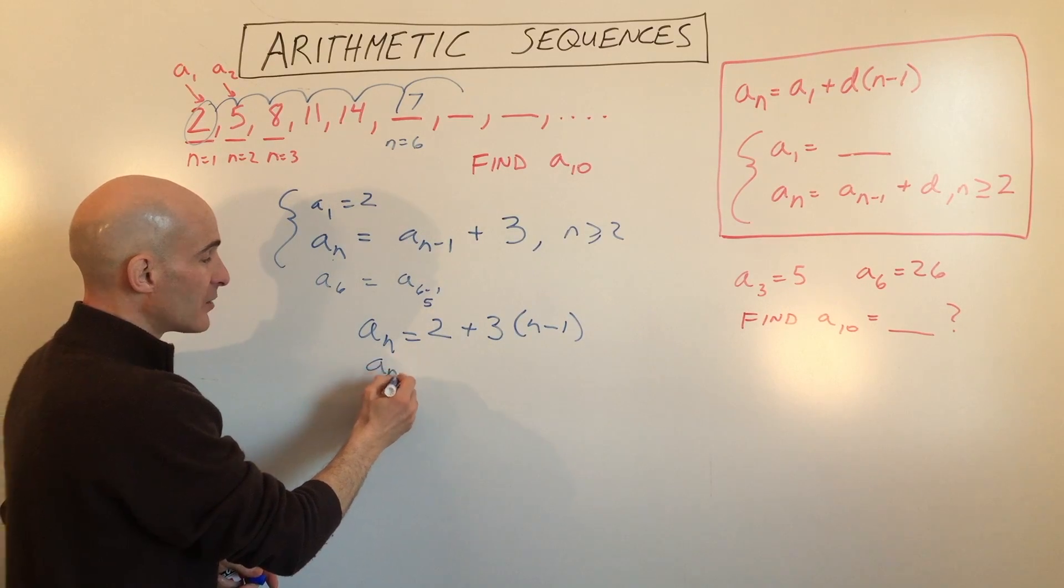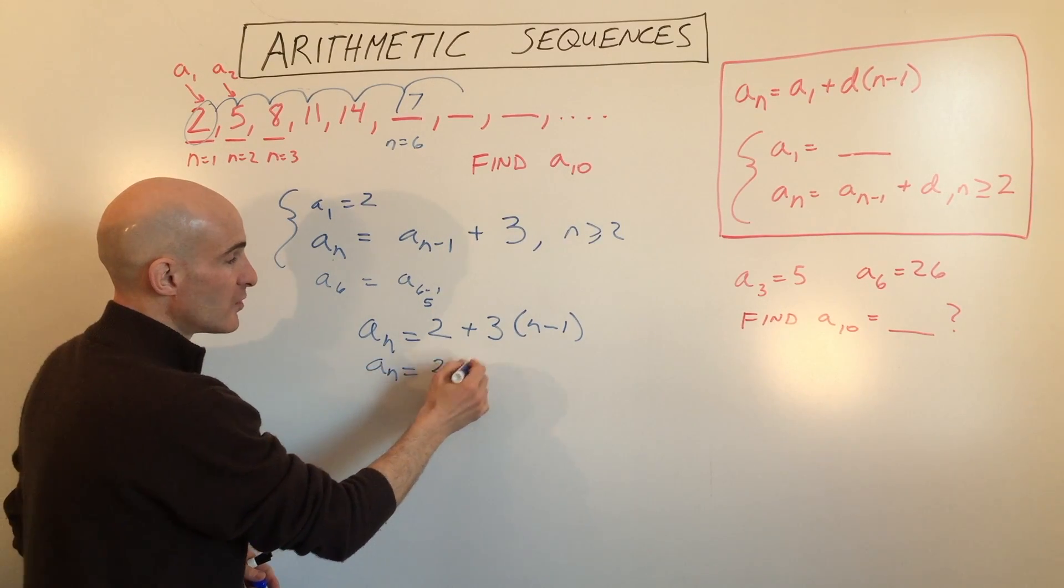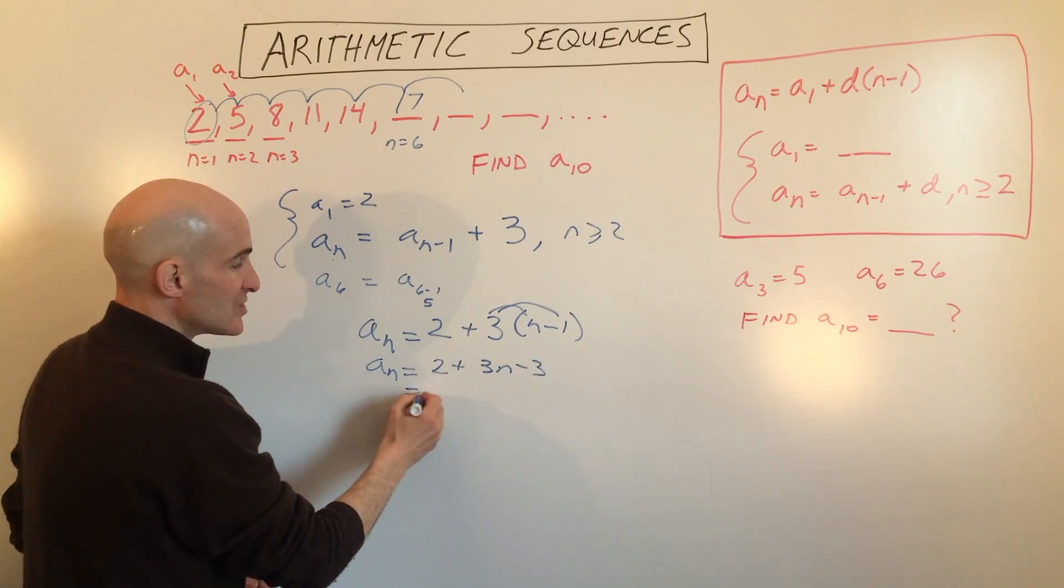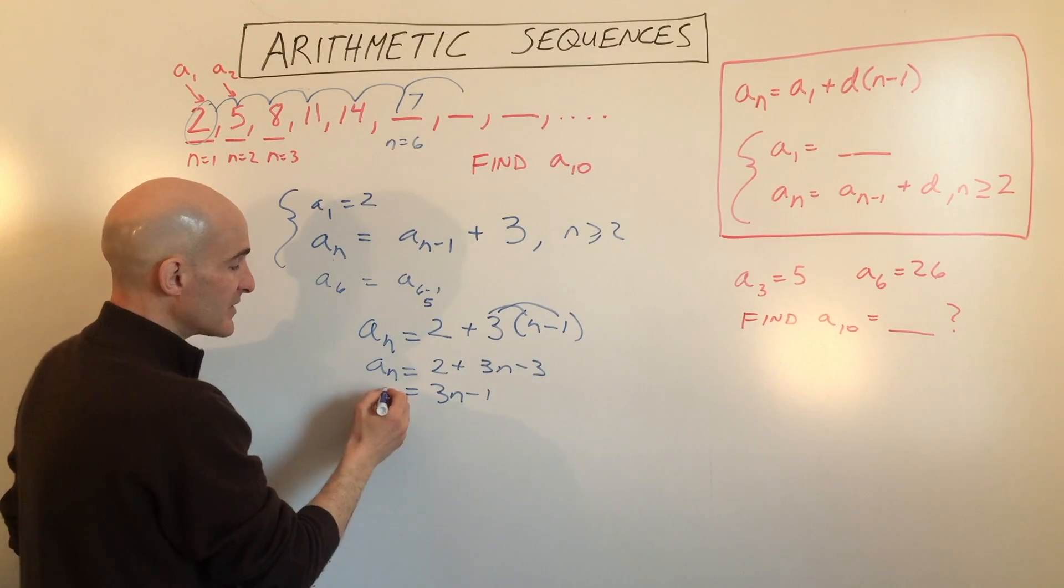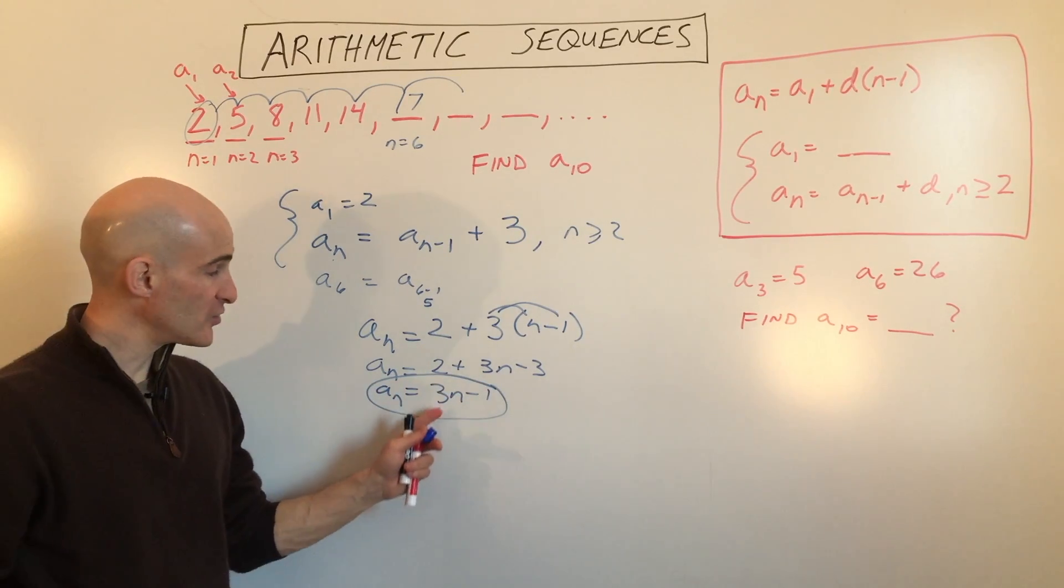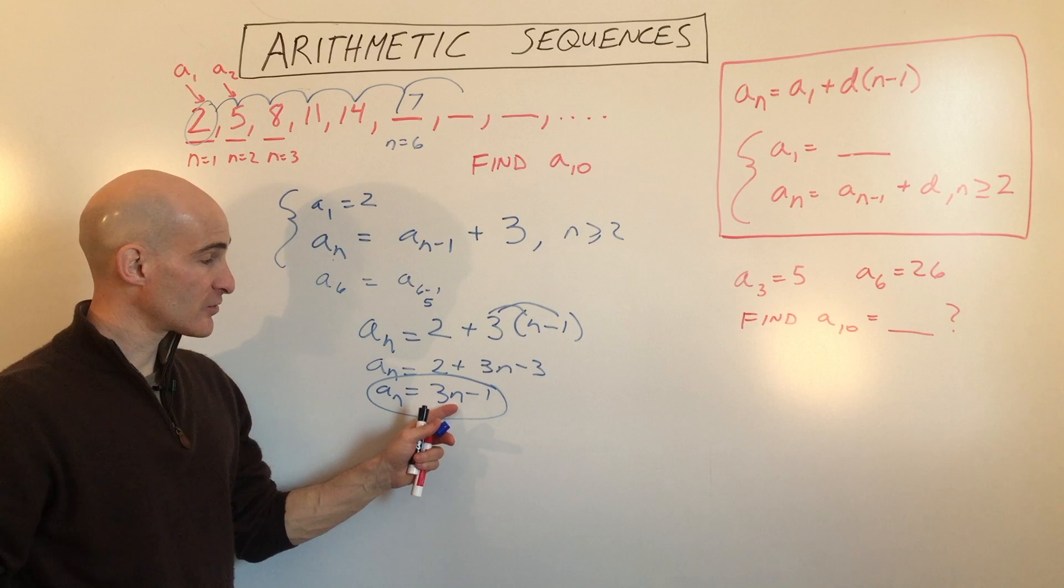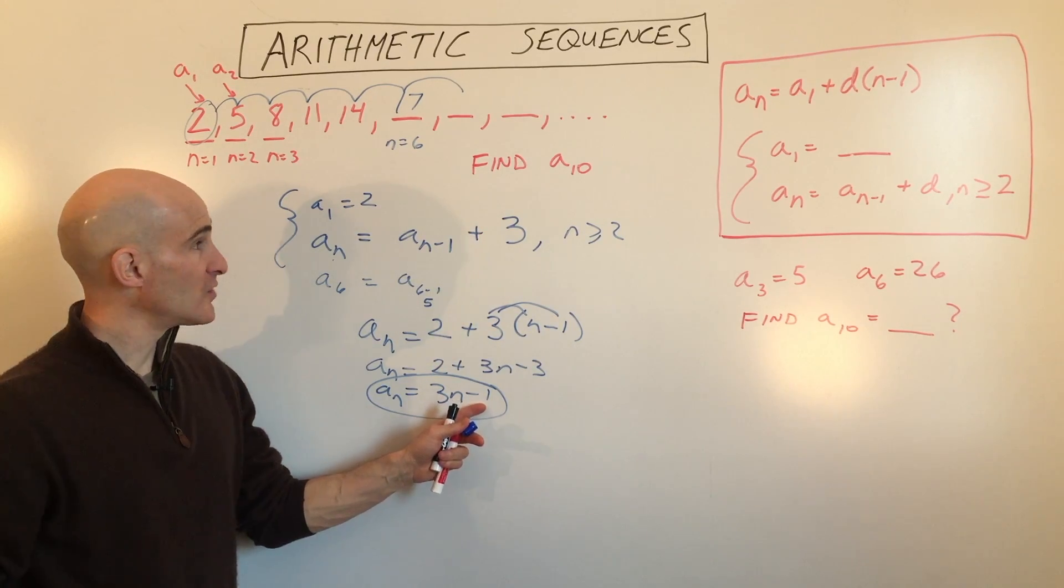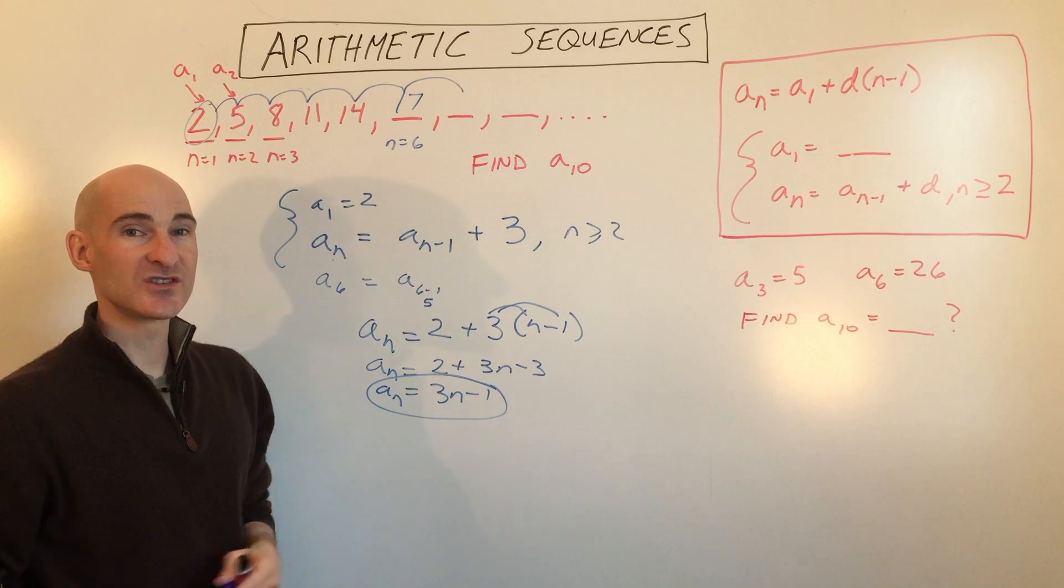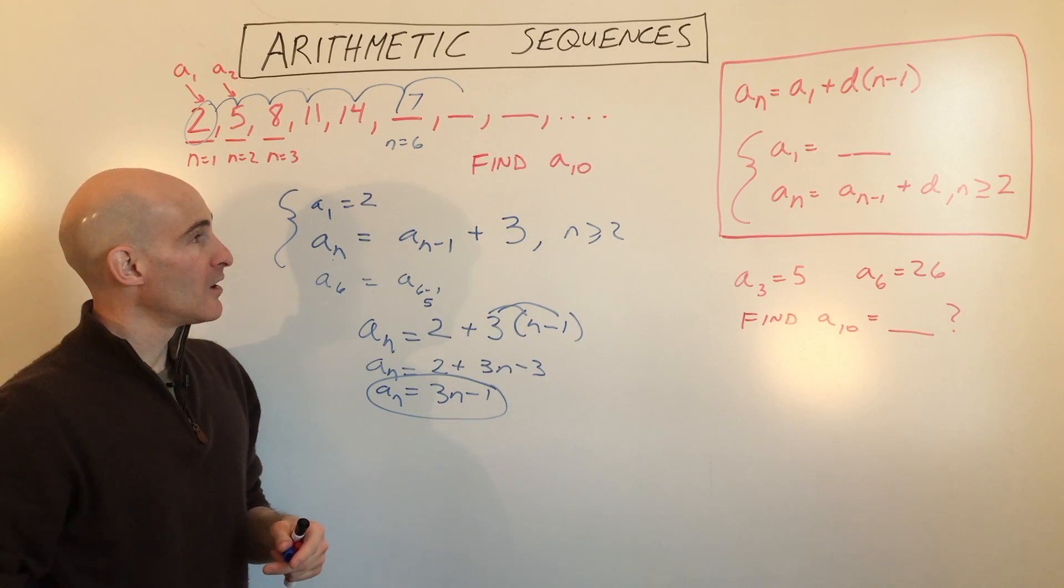So we can simplify this down a little bit further. This is going to be 2 plus 3n minus 3, which equals 3n minus 1. So there we go. Now, if you want to find the 100th term, all we have to do is put in 100 for n. That's 300 minus 1 is 299. Or if you want the 10th term, that's 30 minus 1, which is 29.